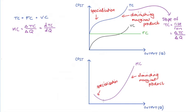The turning point of the marginal cost curve — when it goes from decreasing to increasing — corresponds to what we call an inflection point on the total cost curve, where total cost goes from increasing at a decreasing rate to increasing at an increasing rate. So that's marginal cost.